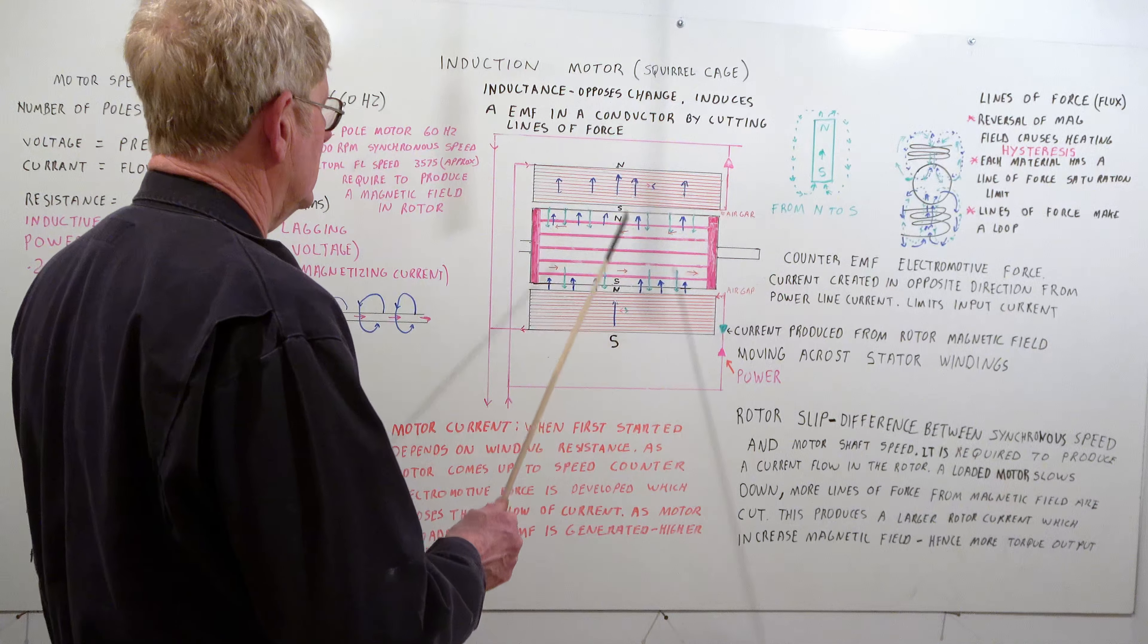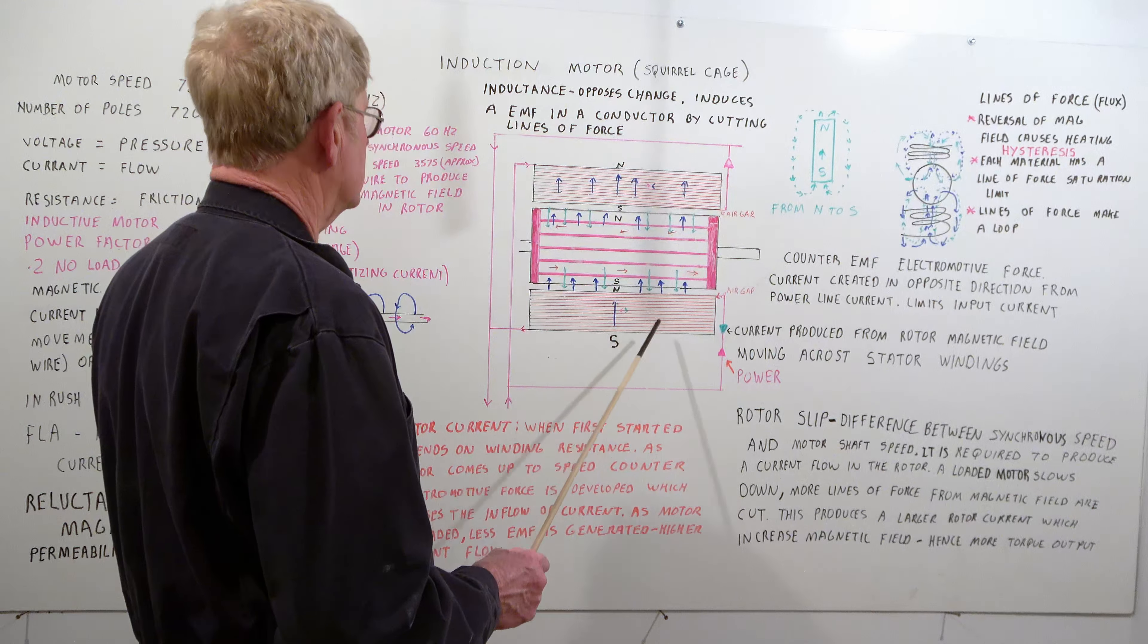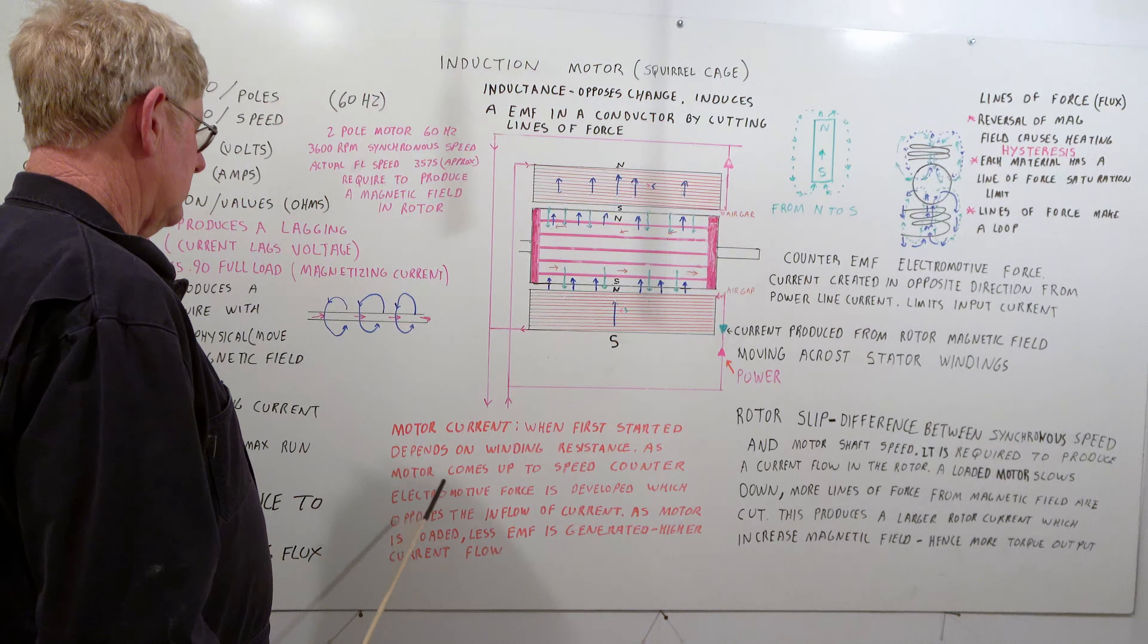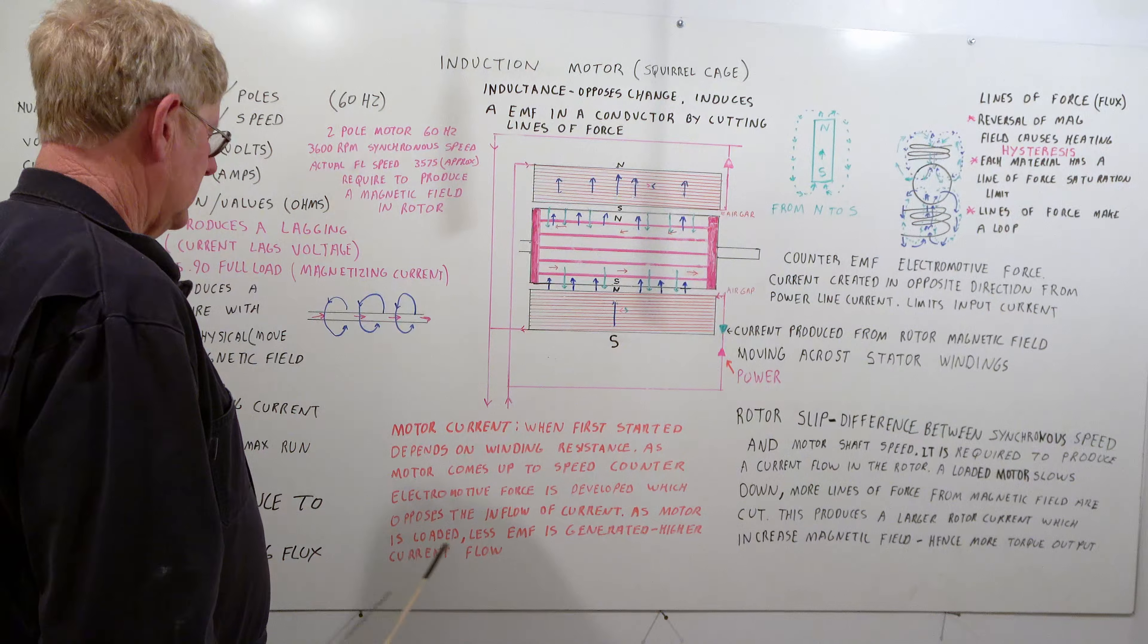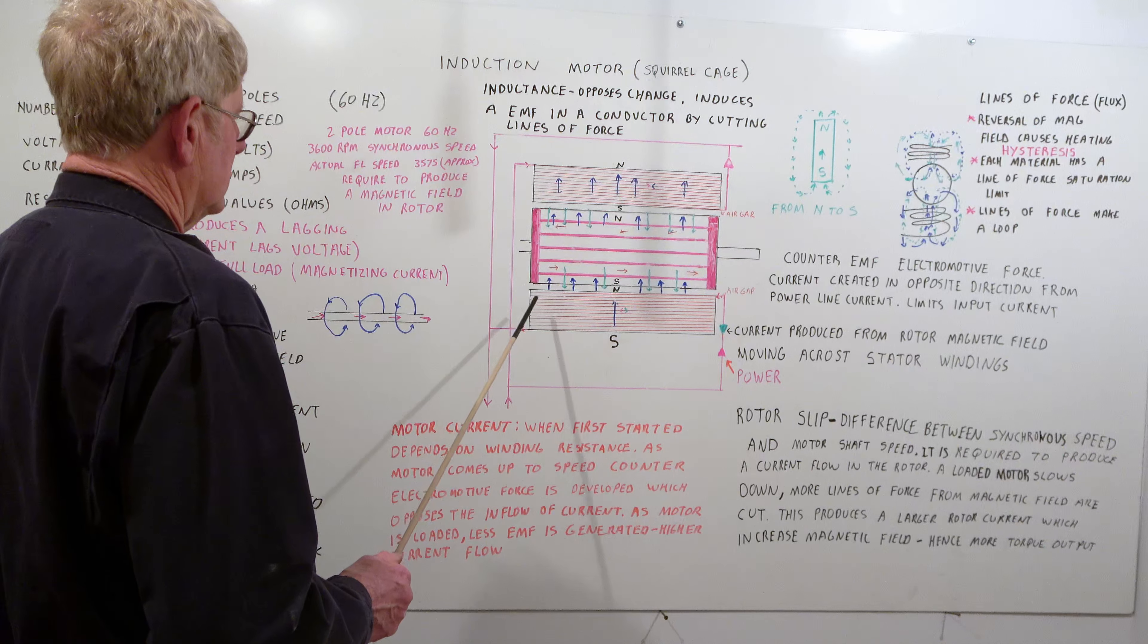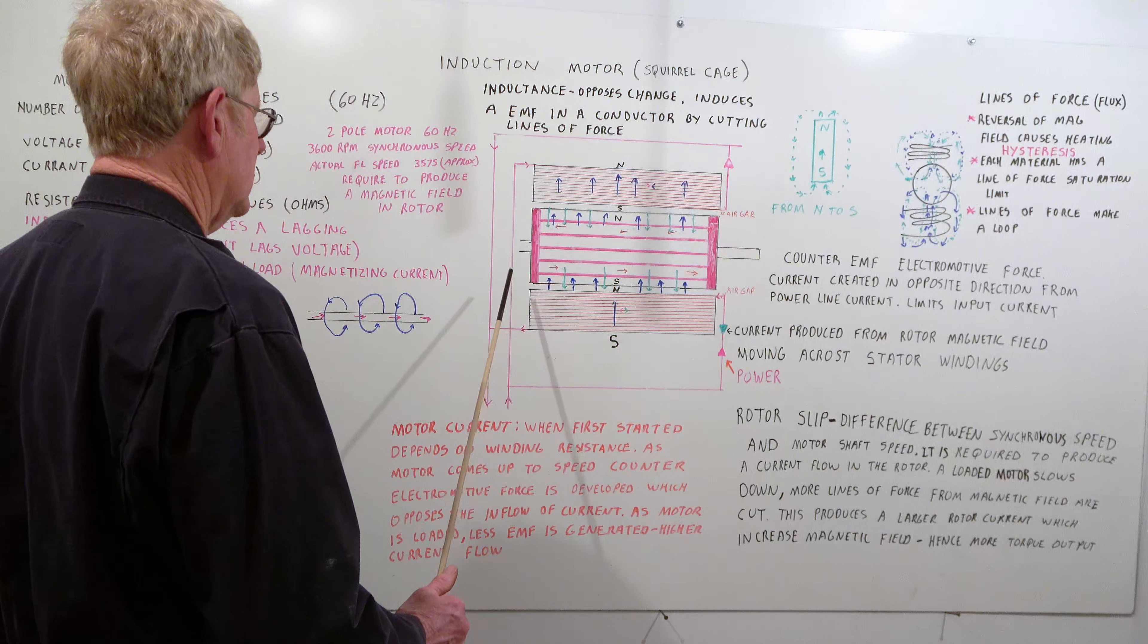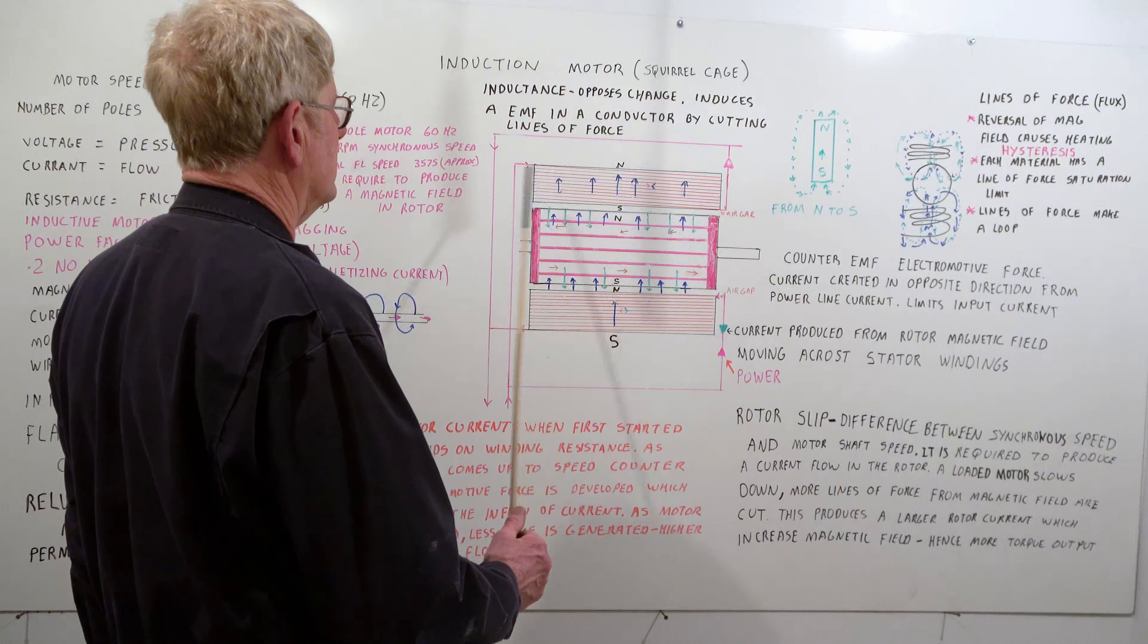This slows down your rotor. There's more lines, less EMF are being produced. These bars are all tied together. Motor current when you first start depends on winding resistance. As motor comes up to speed counter electromotive force is developed which opposes the inflow of current. As motors loaded, less EMF is generated, higher current flow. That's why large motors you cannot do repeated starts. There's a lot of heat developed by the inrush current. Big motors maybe get three starts an hour. Any motor if you're starting at excessive amounts it will develop a tremendous amount of heat in here and you can burn insulation in the windings.